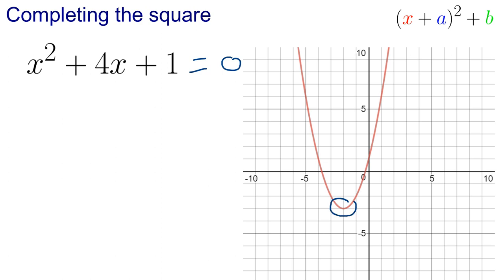If it was the other way up then it would be the maximum point, be the point at the top. So it's the point where that curve changes direction and we can find the coordinates of that point by completing the square as well. That's another application of completing the square.